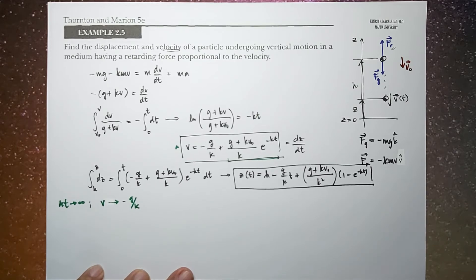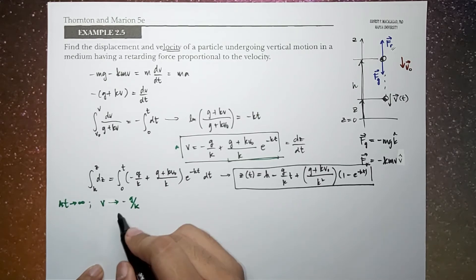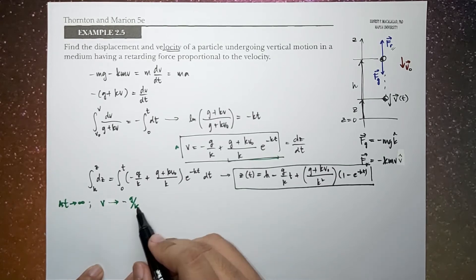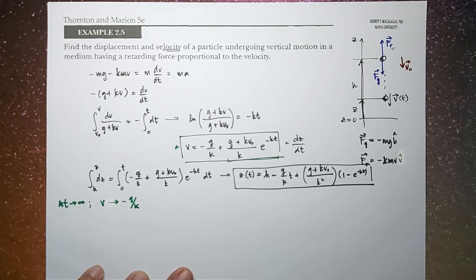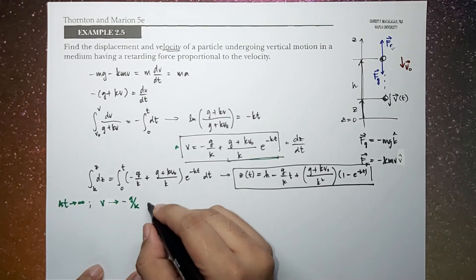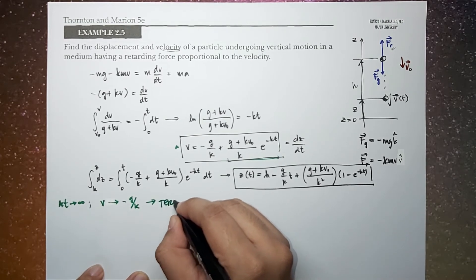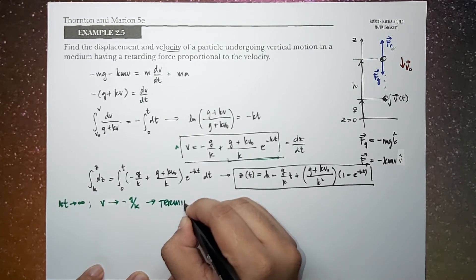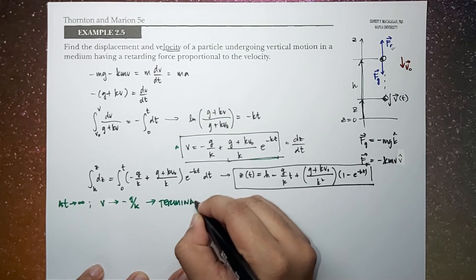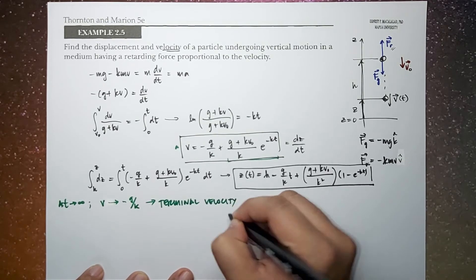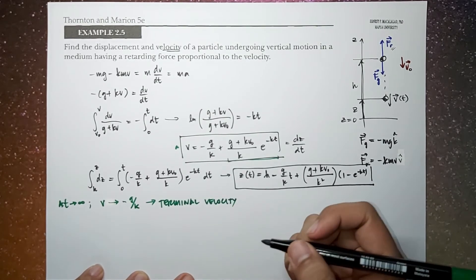Or in terms of magnitude, g over k — the negative sign indicates the direction. The point here is that we call this limiting value the terminal velocity.